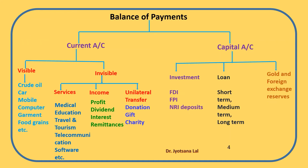Now we will look at the various components of Balance of Payments. The BOP accounts are divided into current account and capital account. Under the current account there are two types of items: visible and invisible. Under visible items, various goods and commodities are included — such as crude oil, car, mobile, computer, food grants, etc. — that are exported to or imported from other countries. All these visible items are recorded under the first item of the current account.